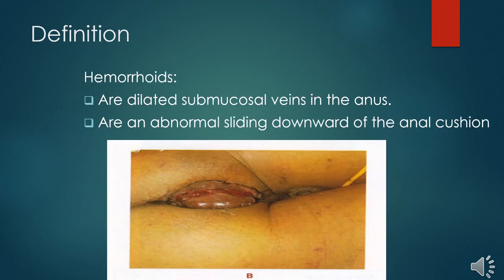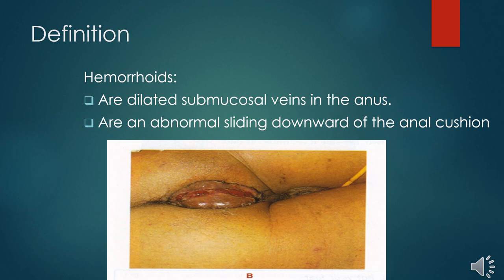So let's define what hemorrhoids are. Hemorrhoids can be defined as dilated submucosal veins in the anus. Hemorrhoids can also be defined as an abnormal sliding down of the anal cushion.